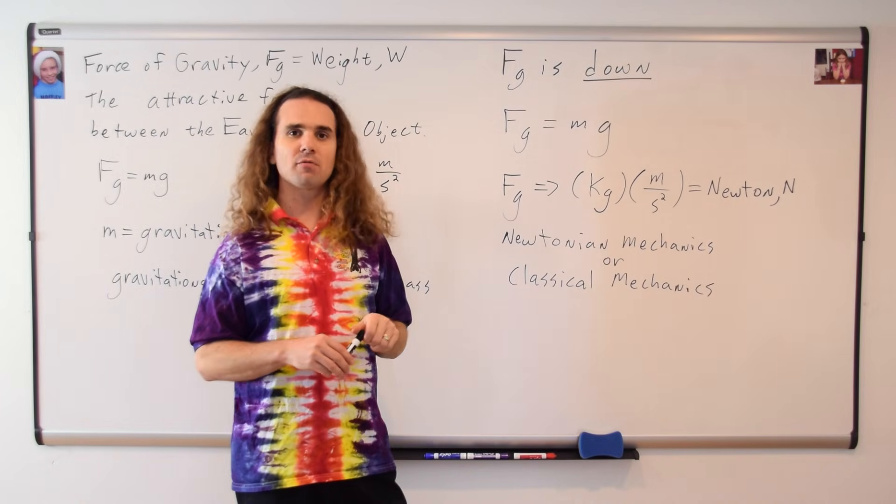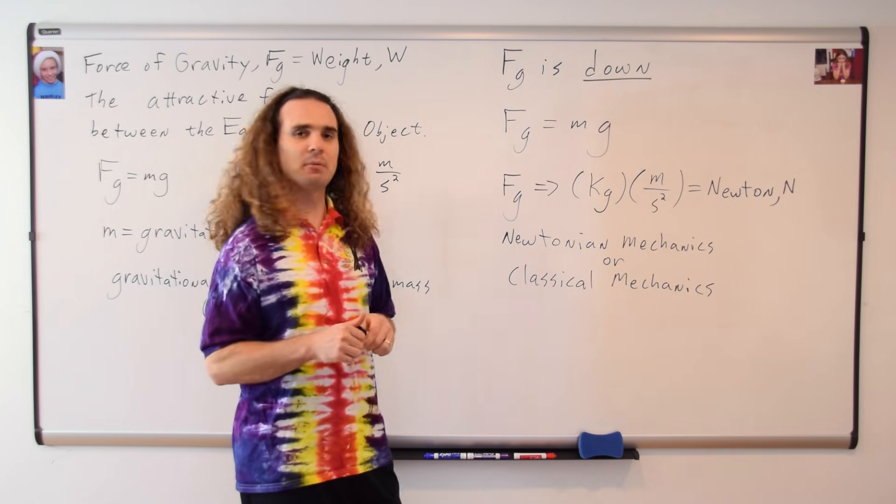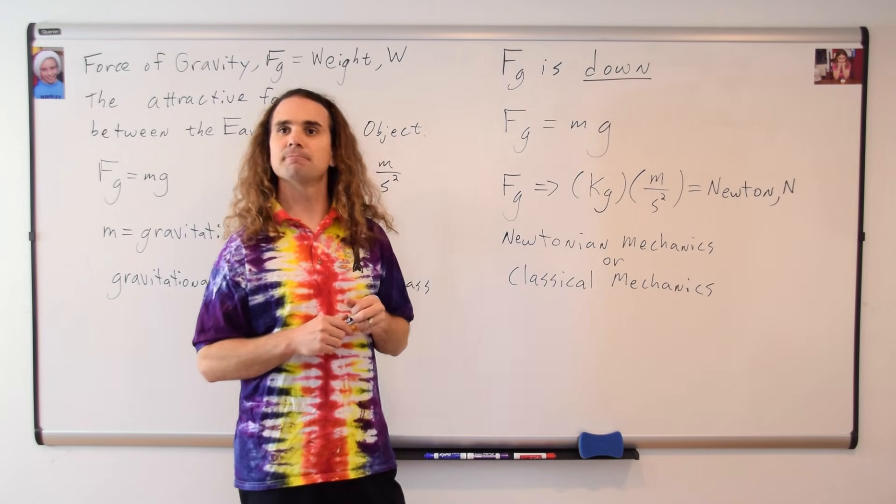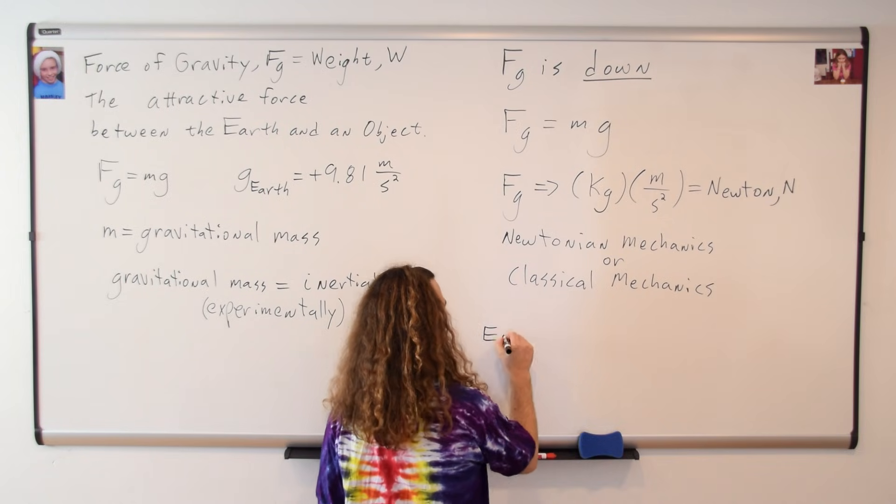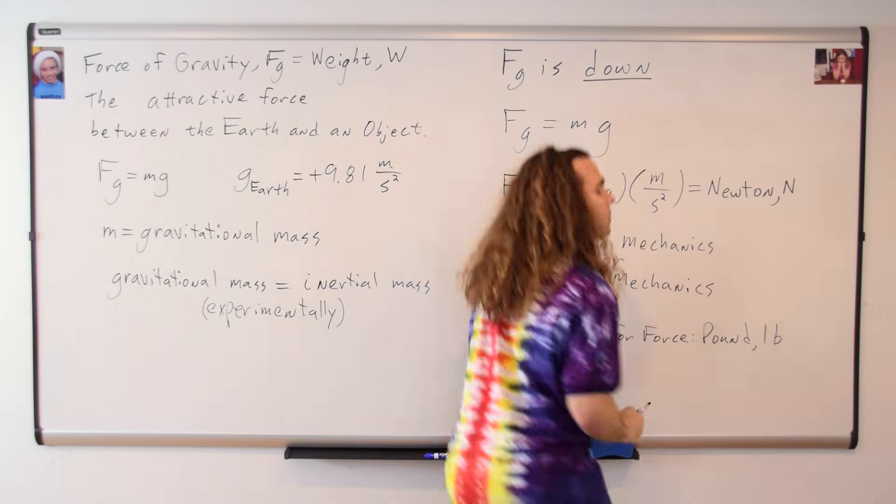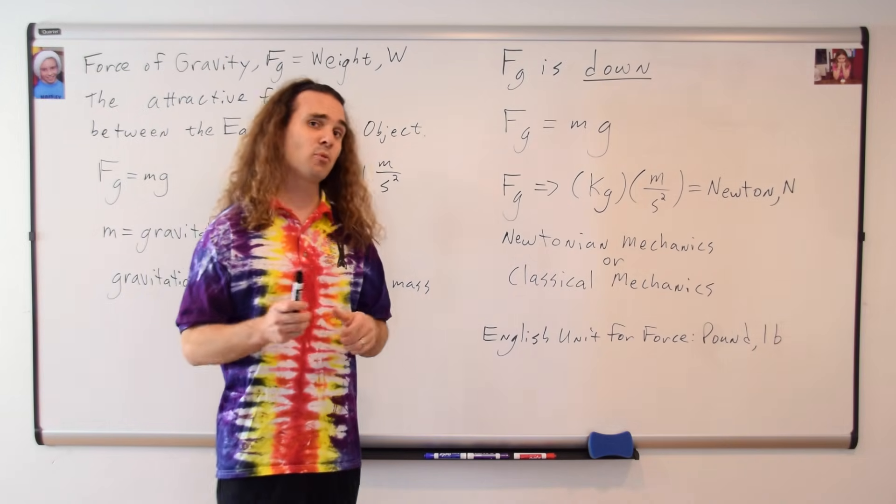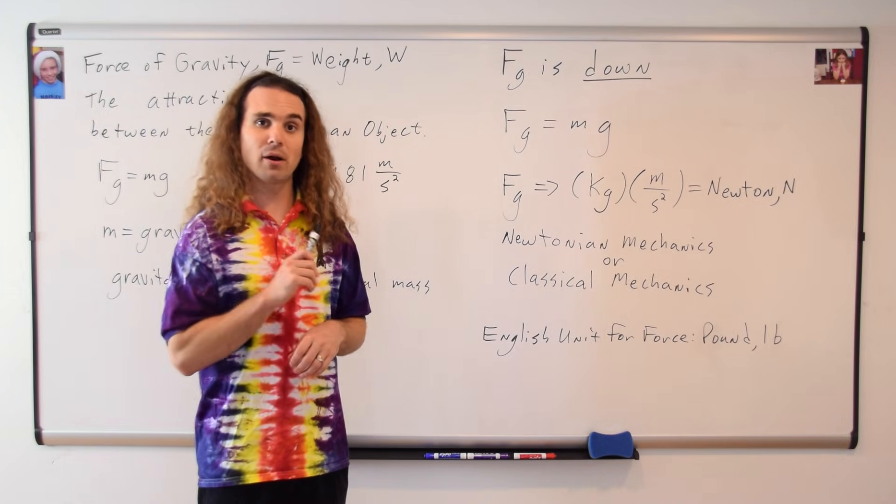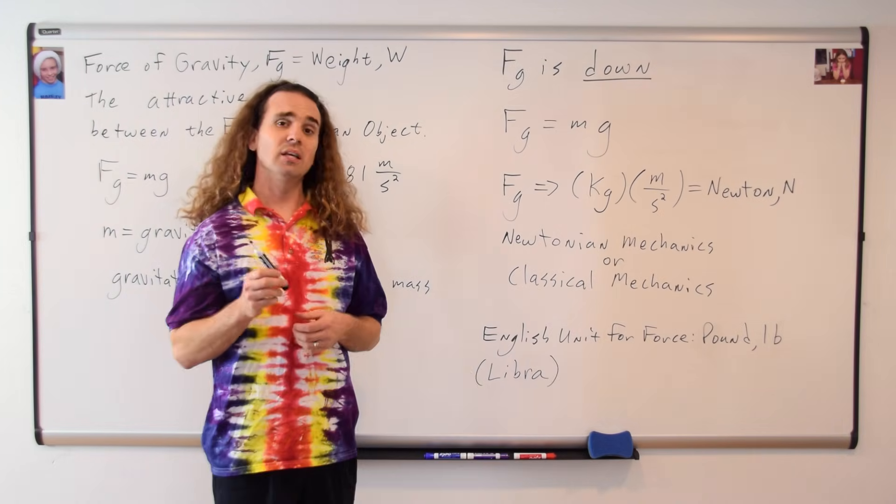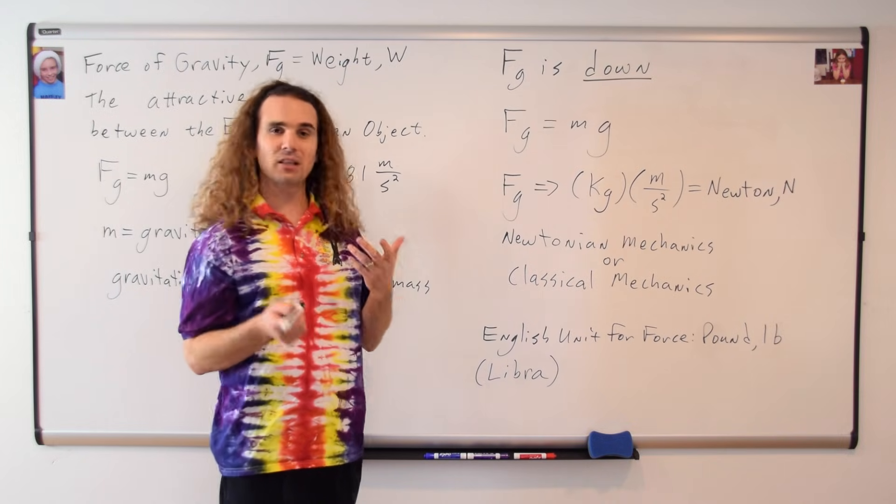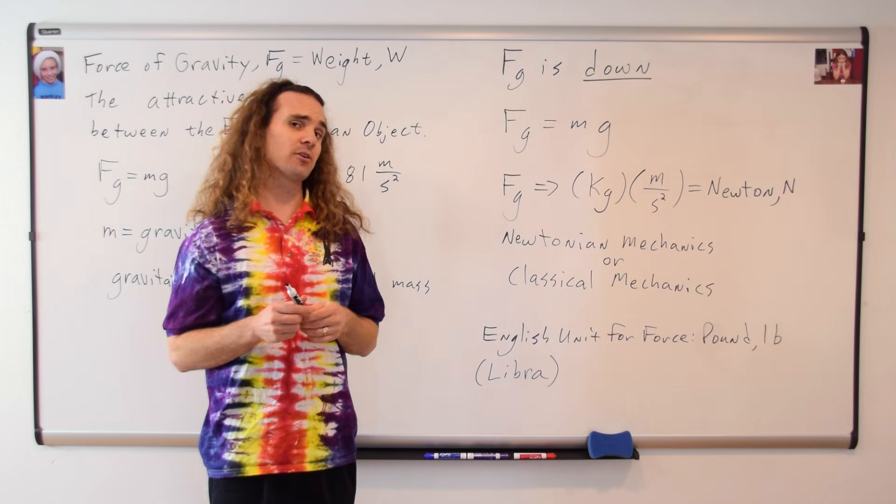We should probably go over the English units for force, just to be complete. Who has an idea for what the English unit for force is? It's the pound. It's the pound. It is the pound. Yes, the English unit for force is the pound. The symbol for that is lb, which is an abbreviation for the Latin word Libra. Libra, which was a unit of weight in ancient Rome, equivalent to approximately 11 and a half ounces, and was the precursor to the pound.